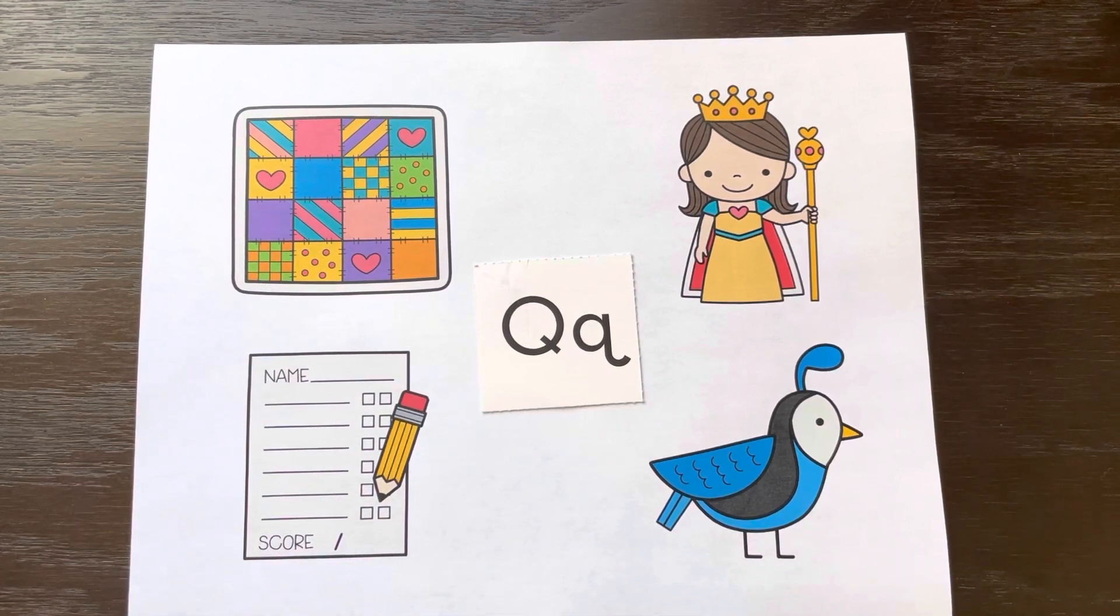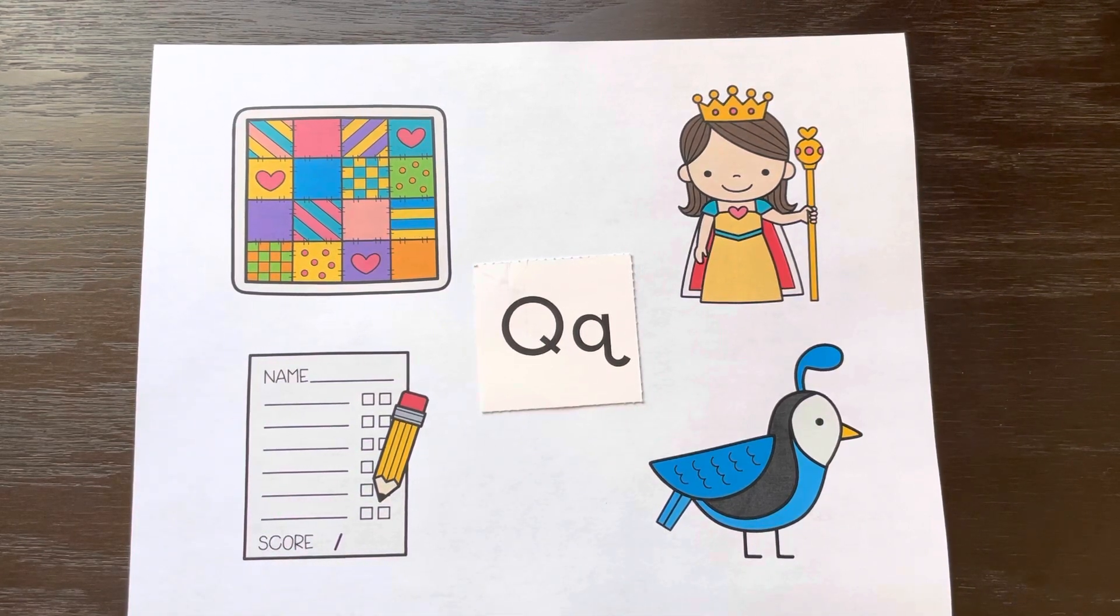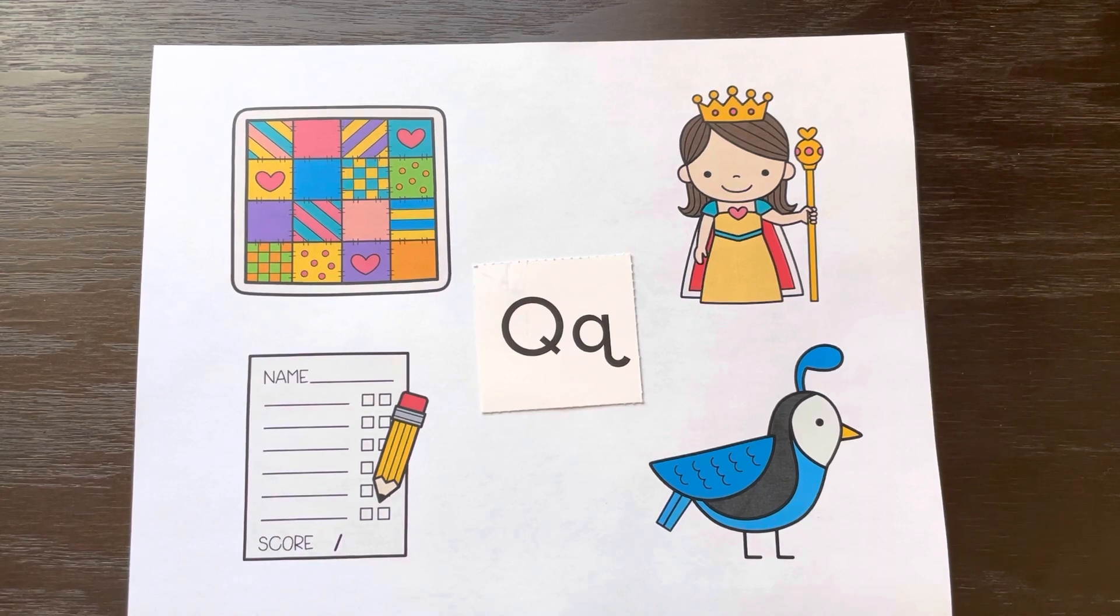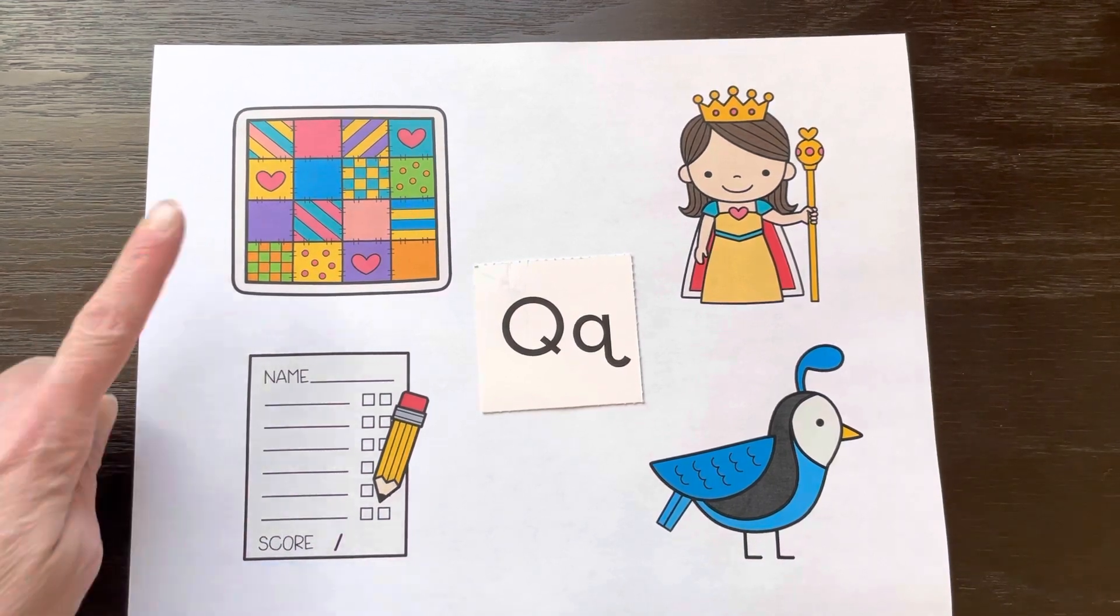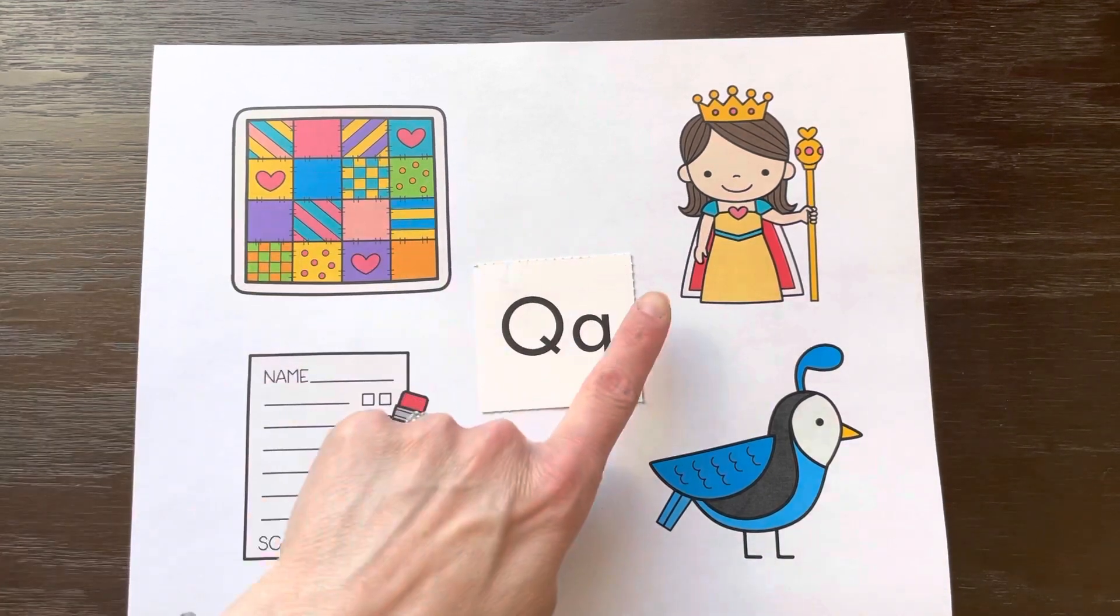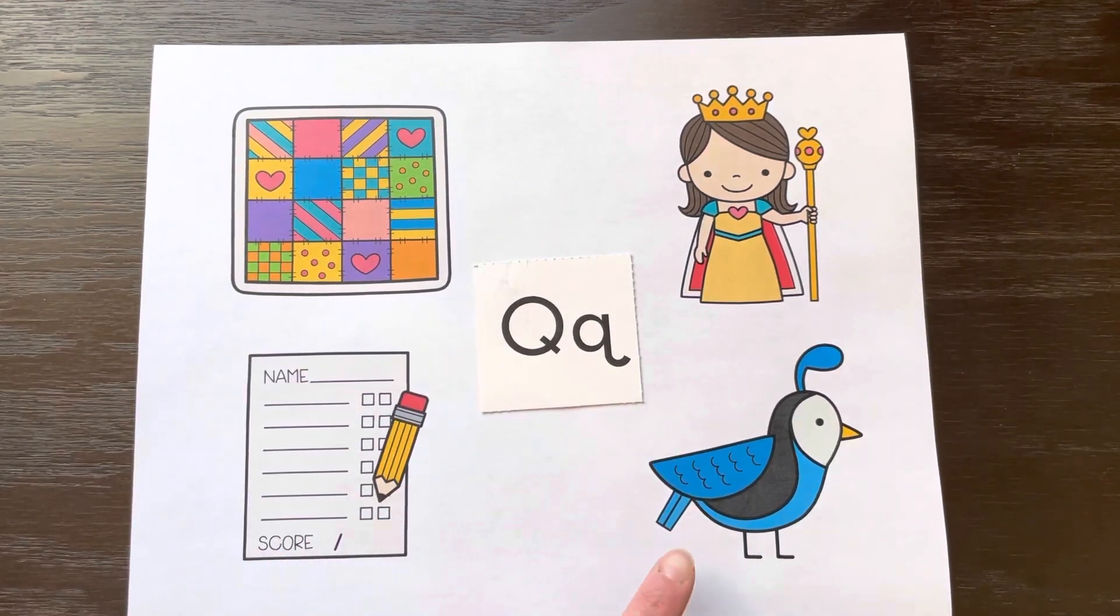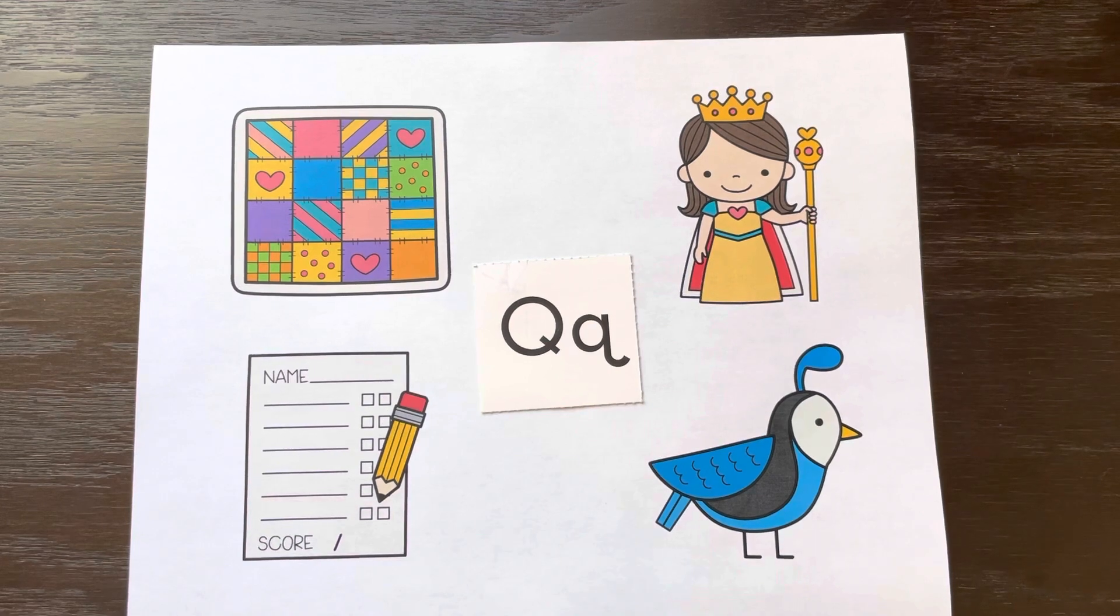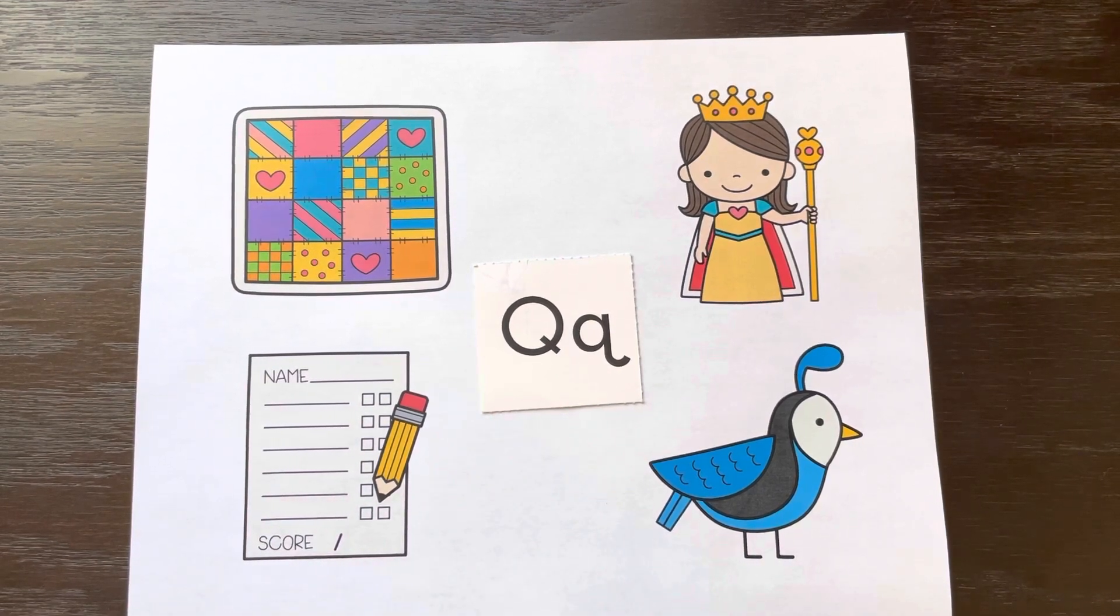Here are some words that start with the Q sound, which is the sound the Q makes. This is a quilt, quiz, queen, quail, which is a kind of bird. Let's sing the letter Q song.